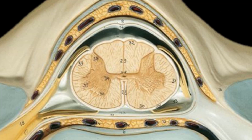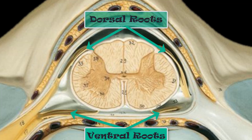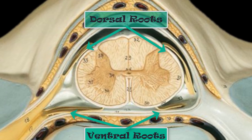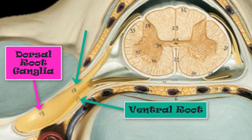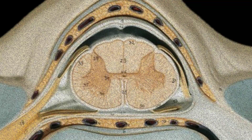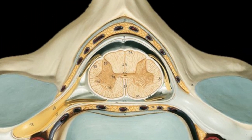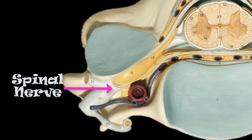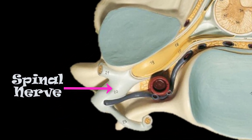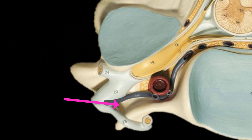Coming out of the anterior or ventral side of the spinal cord we have the ventral roots, and on the posterior side we see the dorsal roots. The dorsal roots terminate in a structure called the dorsal root ganglia. At the center of the spinal cord we have the central canal, which is filled with cerebrospinal fluid. The dorsal root ganglion and the ventral root will come together to form the spinal nerve, which then splits off into the dorsal ramus and ventral ramus.